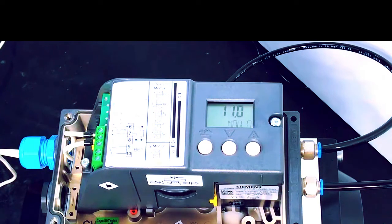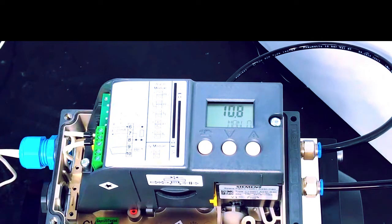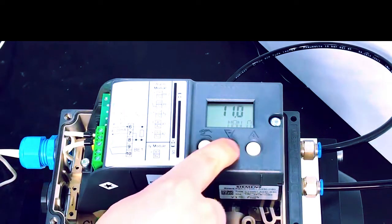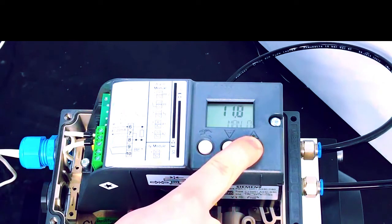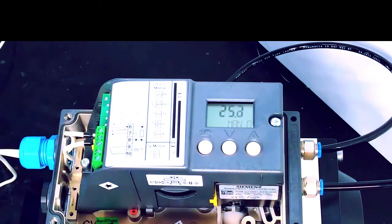After we exit the positioner is in manual mode. We can adjust the position by pressing the plus and minus buttons but in most cases you'll be wanting to control this remotely either by 4 to 20 milliamp signal or by your network protocol.